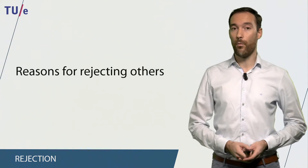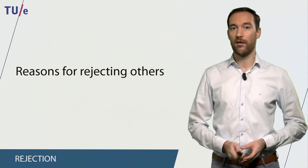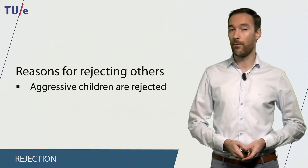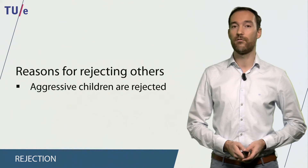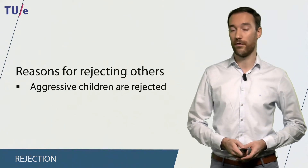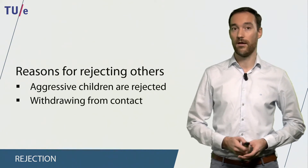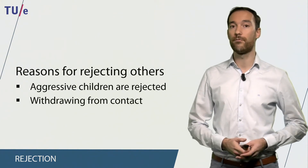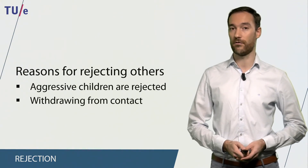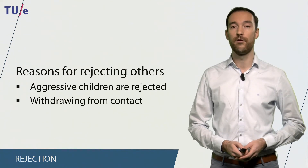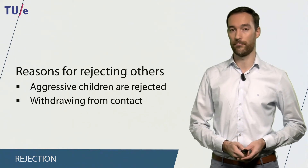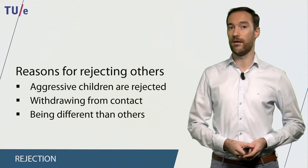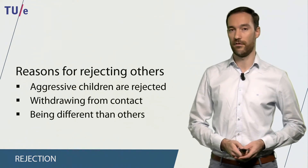Many reasons exist why people reject others, and some studies are done with children. For example, aggressive children tend to be rejected more than non-aggressive children. In addition, if children or adults withdraw from having social contact with others, they are also more likely to be rejected by those other people. And a final strong predictor of being rejected is being different than others.